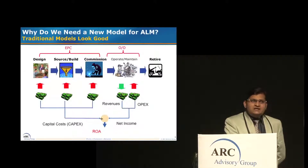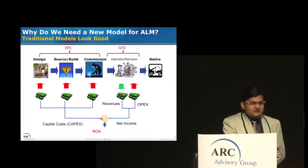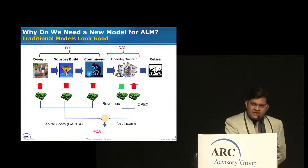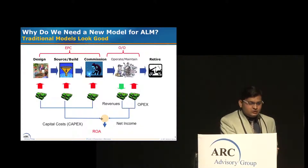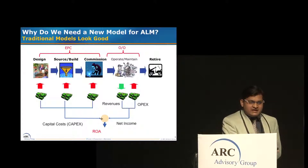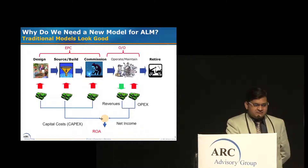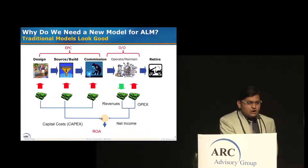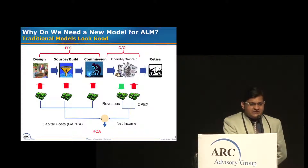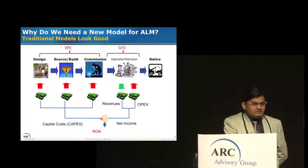Why do we need a new asset management model? We already have a model that has been running for a very long time. We have a clear idea of designing, procurement, sourcing, building, commissioning, operations, maintenance, and retirement of assets. We have a clear idea of how we handle capital CAPEX investment and operational expenditures. So why do we need a better model for asset management?